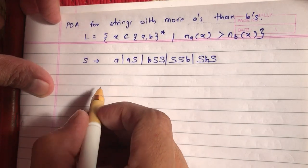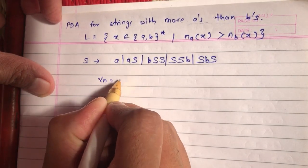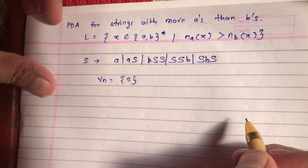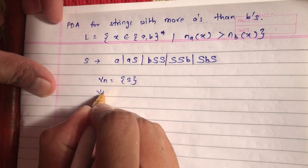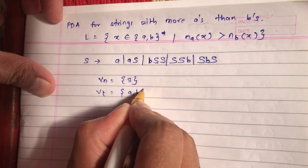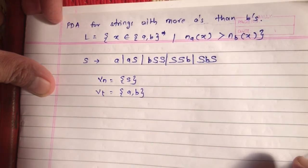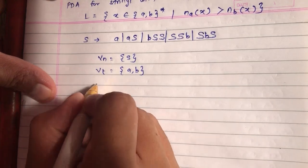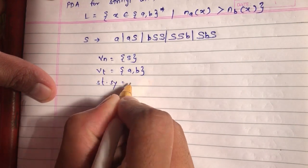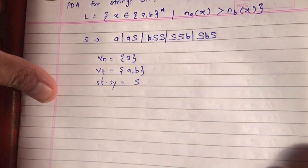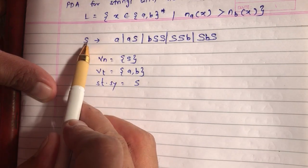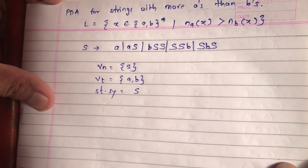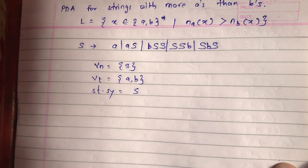In this grammar, the non-terminal symbol is S. The terminal symbols are A and B. The starting symbol of the grammar is S. And these are our production rules: S gives A, AS, BSS, SSB, or SBS.